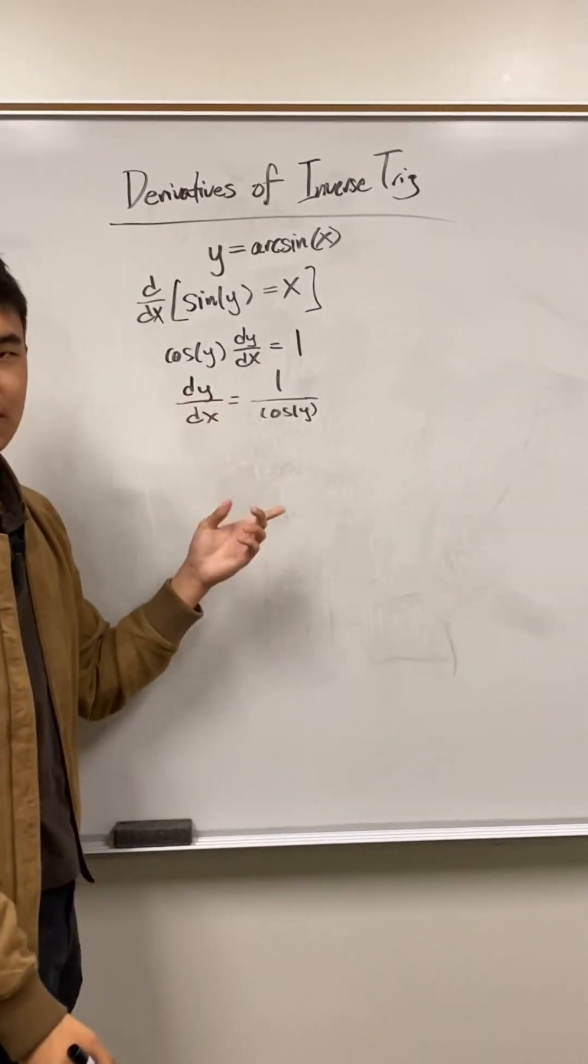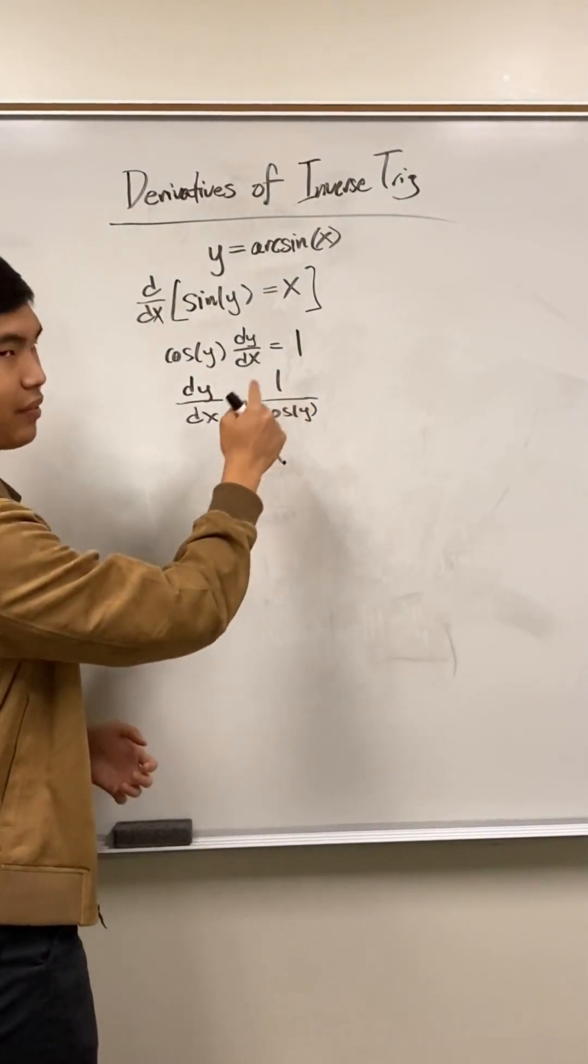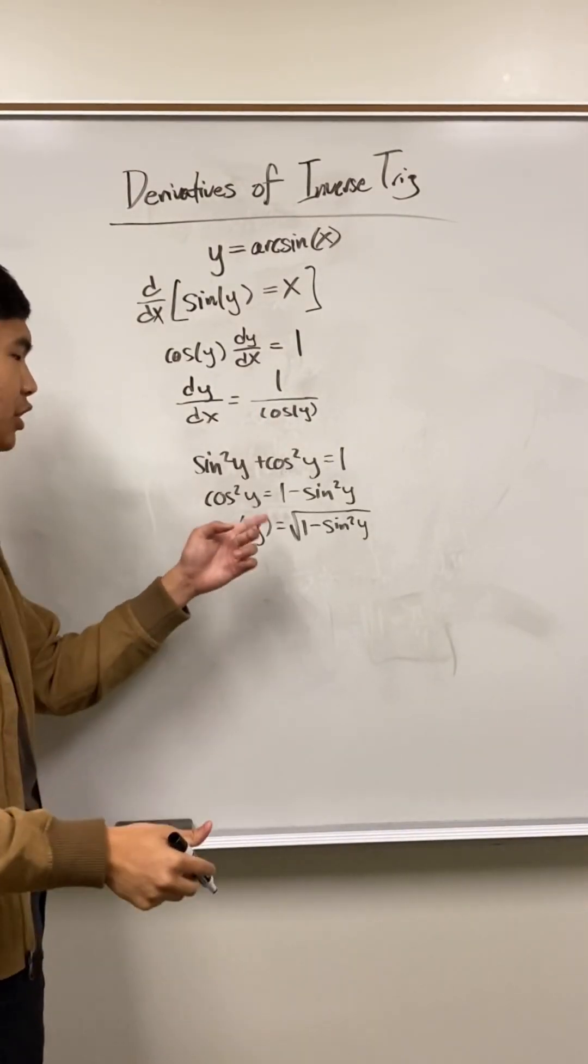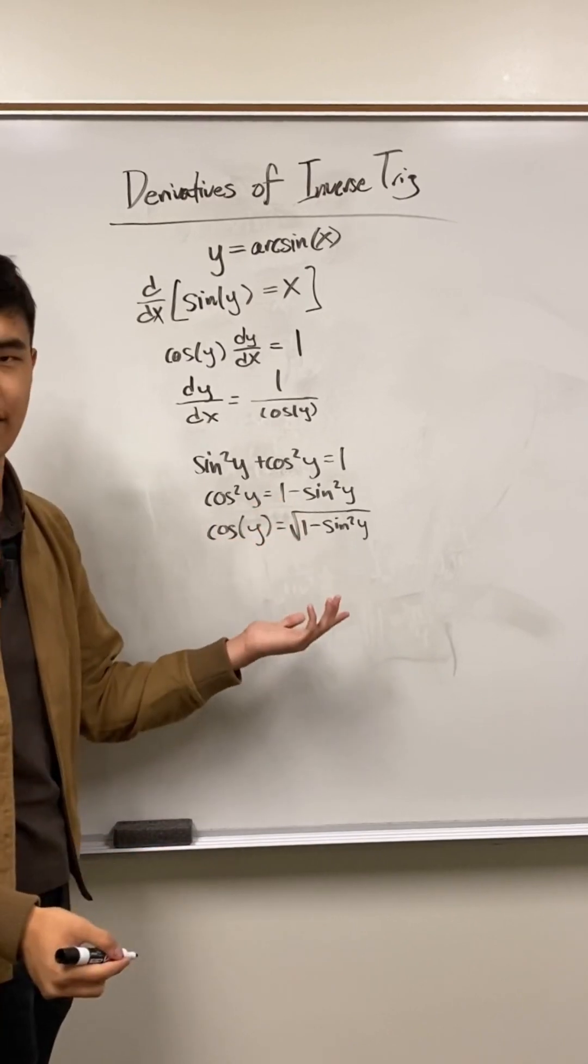Now we see that the derivative is 1 over the cosine of y. But we want this in terms of x. I'm going to use this trig identity to solve for cosine of y. And we see that it's equal to the square root of 1 minus sine squared y. So now we have this.